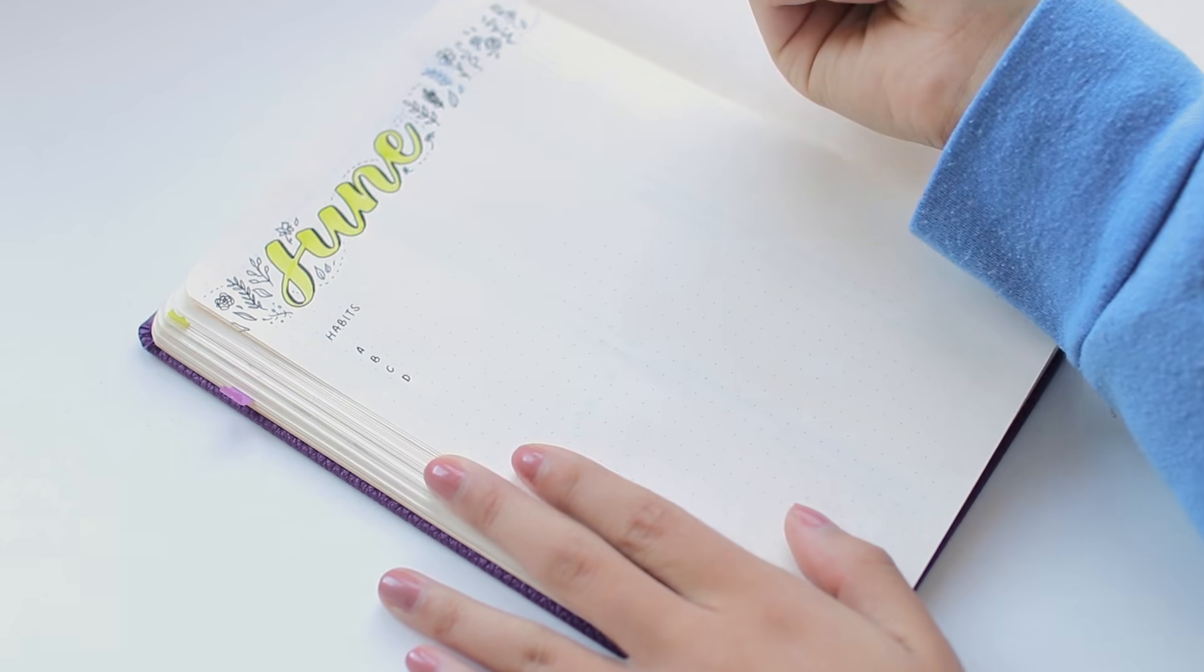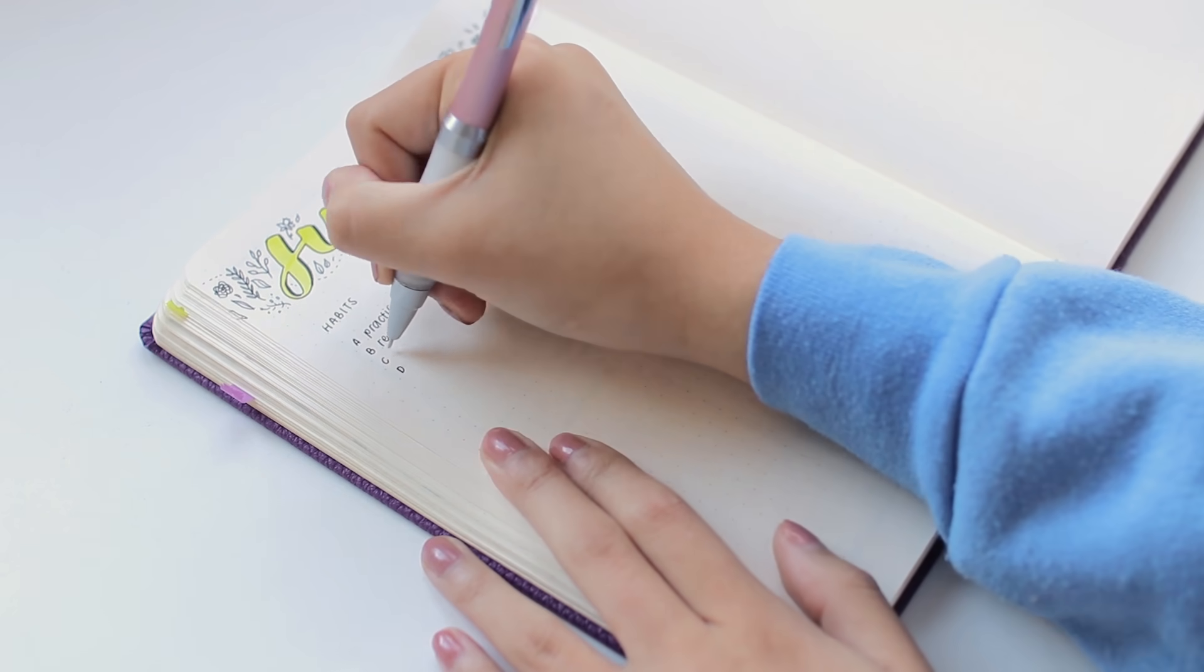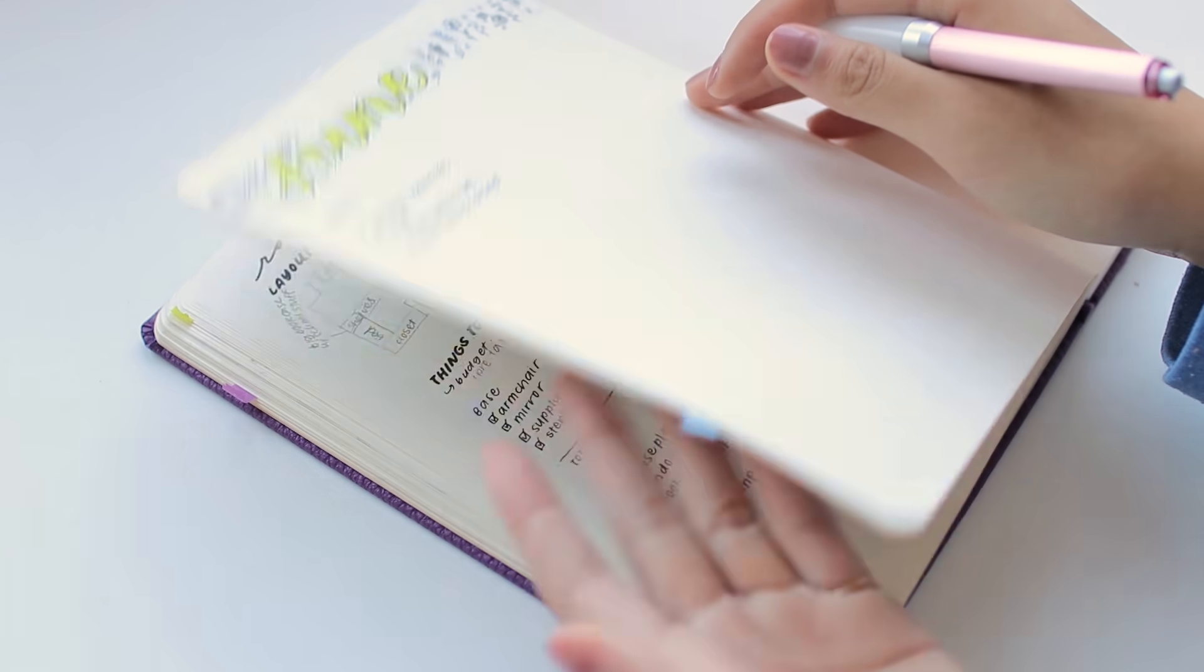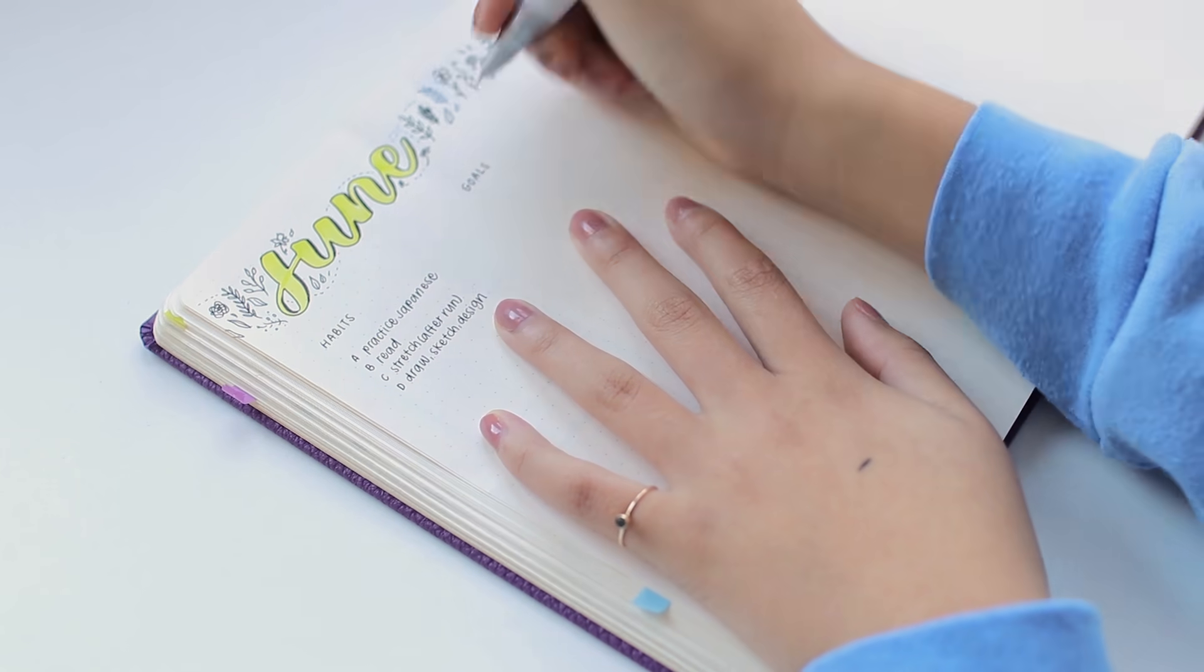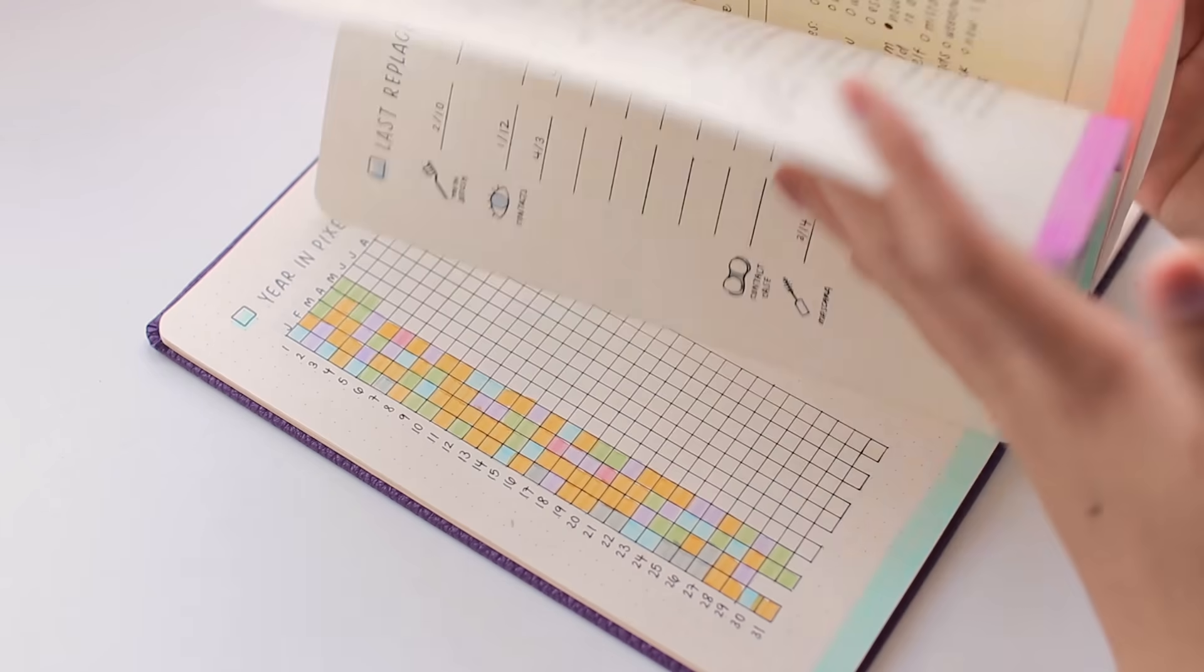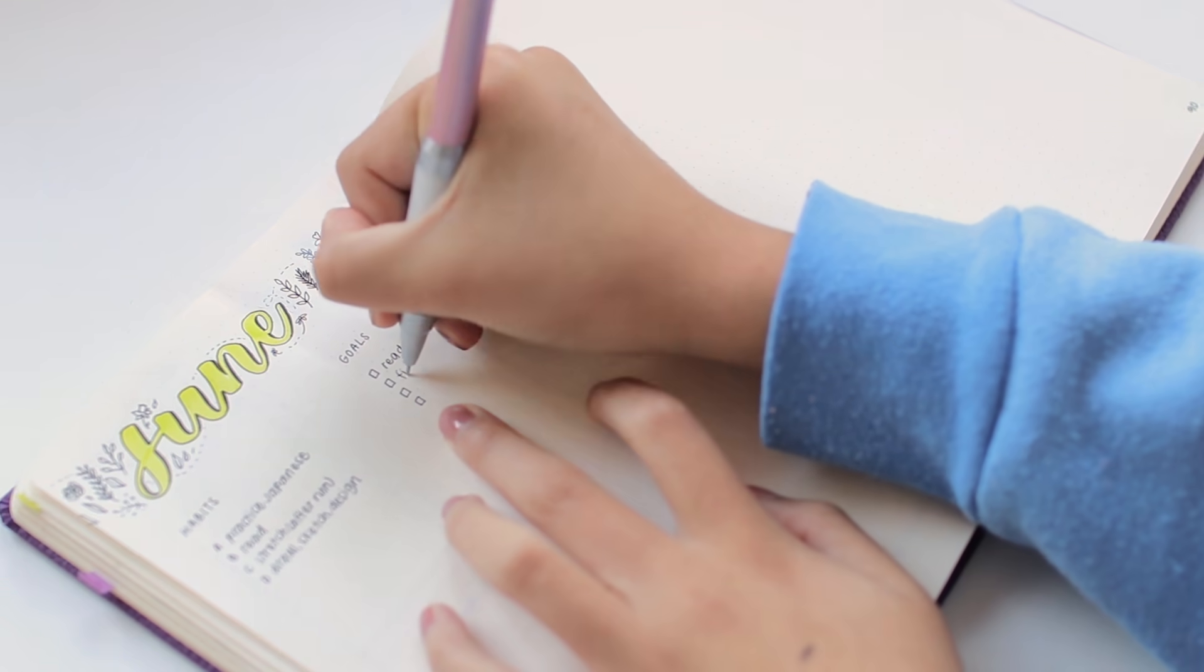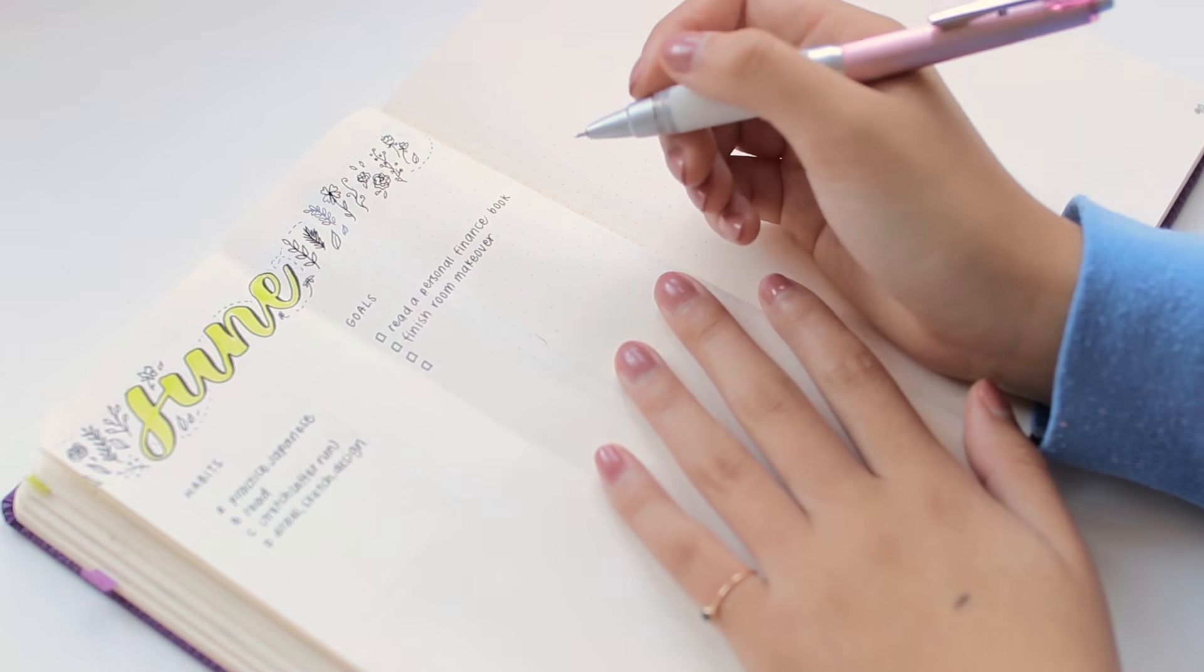But anyways, below my drawings of leaves and the June title lettering, I'm setting up pretty much the same systems that I always have. First, for this month, I'm setting up my habits. I'm keeping a lot of the same habits as I wanted to work on in May because those are still things I'm struggling to keep up with. But the fourth one that I added is to draw or sketch or design in some way every single day because I want to improve my visual art skills. It's something I find very relaxing and very satisfying.